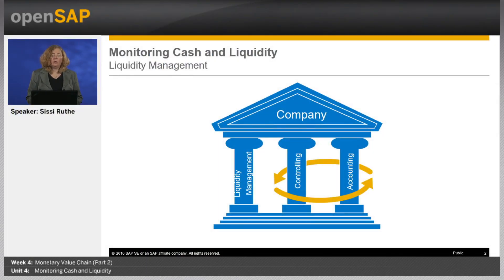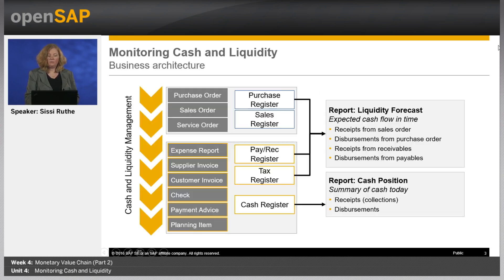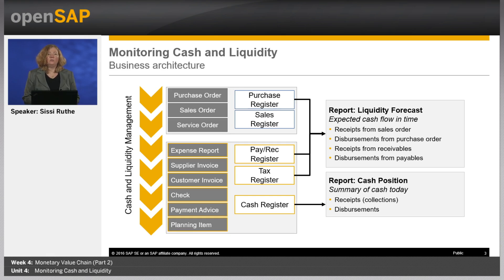You might remember this slide from Week 1. The main pillars of every company to control their business from a financial point of view are: liquidity management as an early warning system and to ensure financing; controlling for profitability, budgeting and planning; and accounting for your external stakeholders. In this unit we will concentrate on the pillar liquidity management. Cash and liquidity management should be independent from accounting to capture complete information. It relies on registers, not on source documents, which guarantees avoiding double counting and full audit.